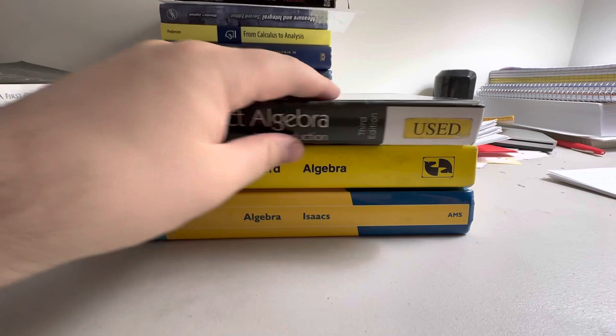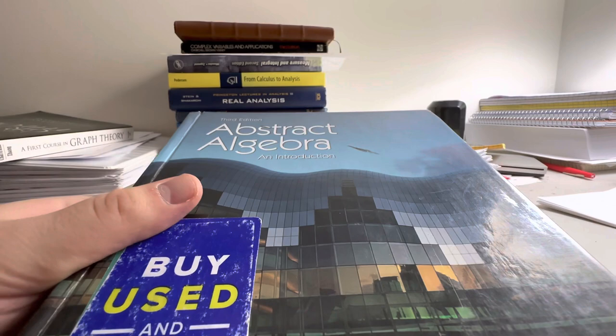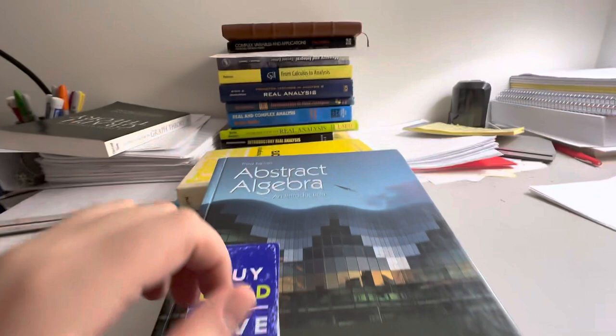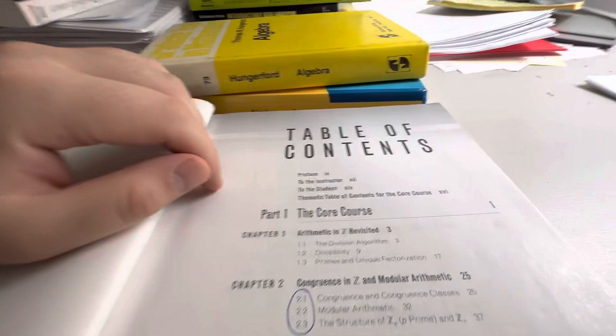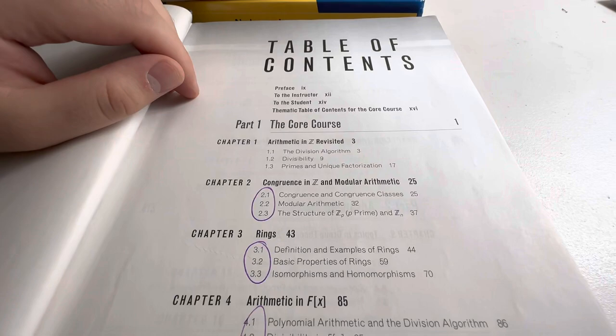We have Abstract Algebra: An Introduction. This is the Baby Hungerford book. This is the textbook that I used when I was in the master's program, and I had to take the undergrad version of Modern Algebra first before I could take the graduate-level version. And this book is really, really good. If you're interested in an undergraduate textbook in abstract algebra, Baby Hungerford will treat you well.